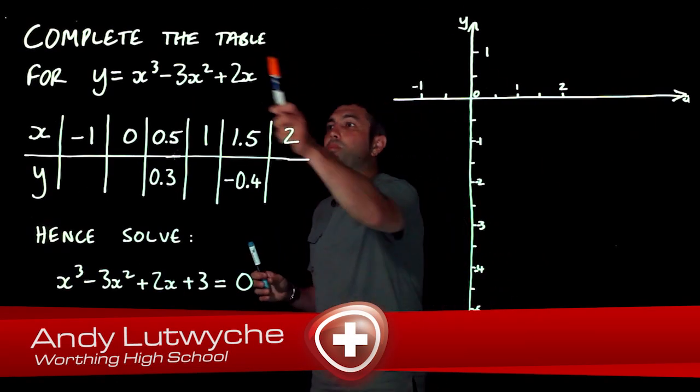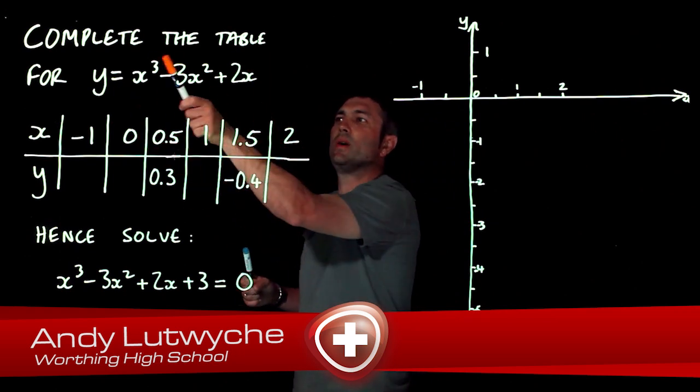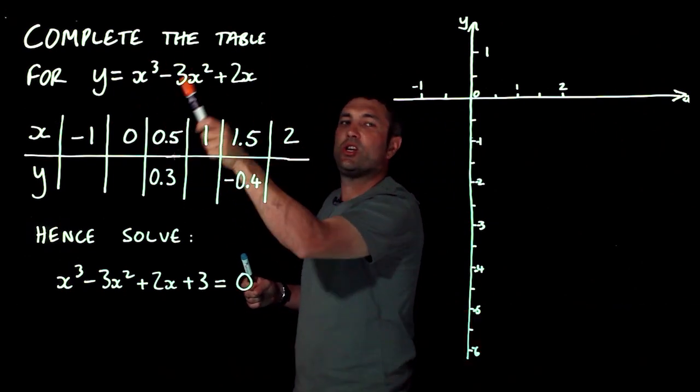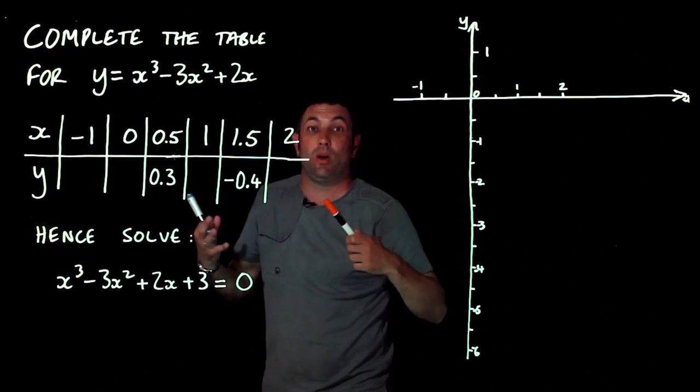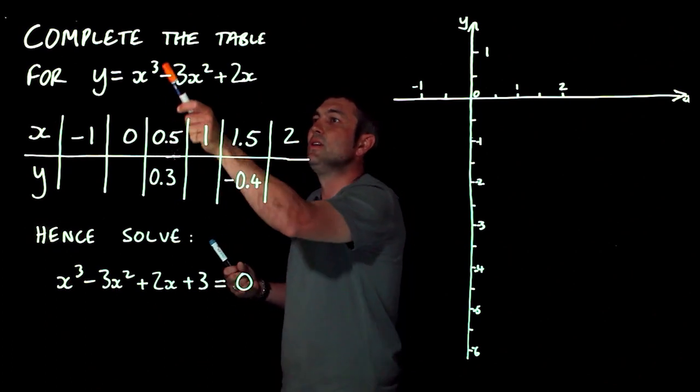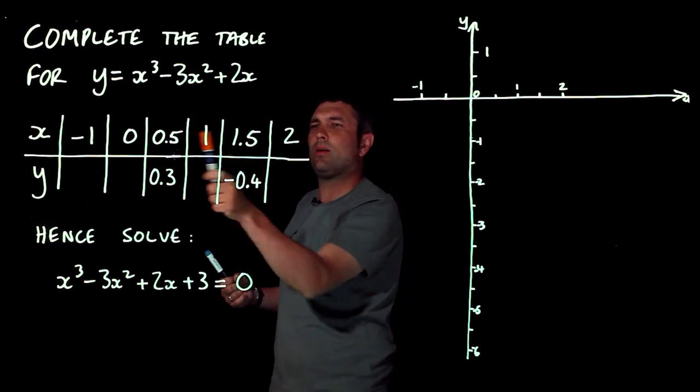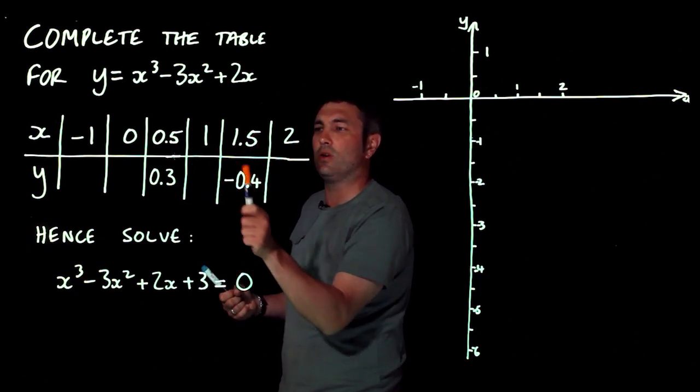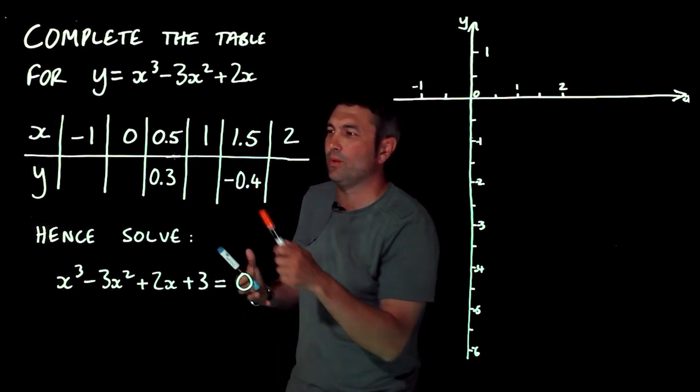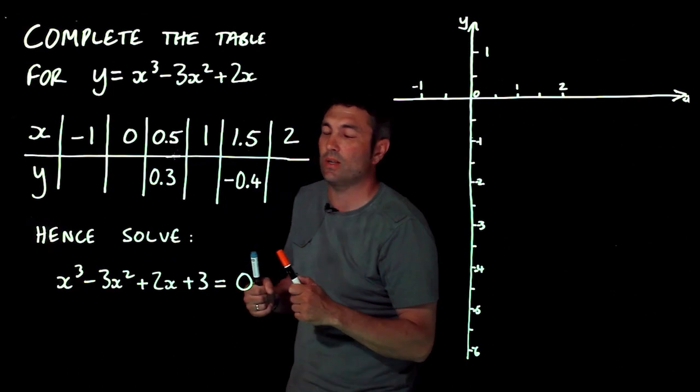Right, in this question we're asked to complete the table for what's known as a cubic. I know it's a cubic because x cubed is the largest power of x. So here we go, they've drawn a table for us. There's a couple of nasty values in there, but fortunately they've given them to us. If they hadn't given them to us, you'd have a calculator anyway, so that's fine.